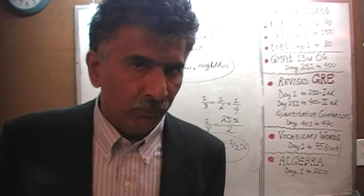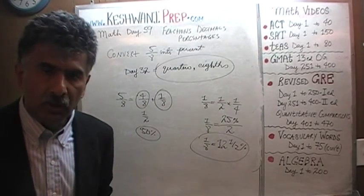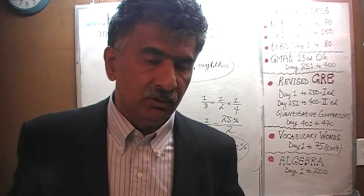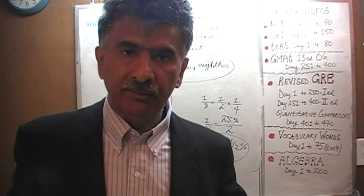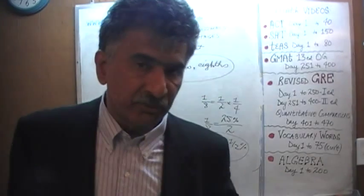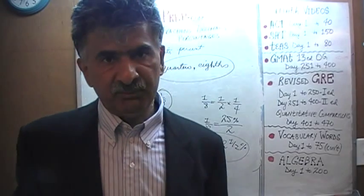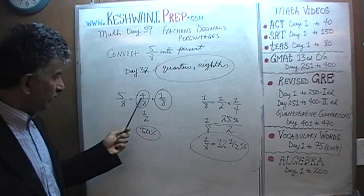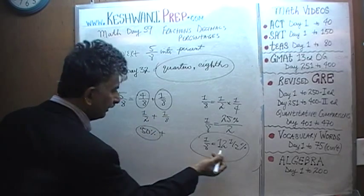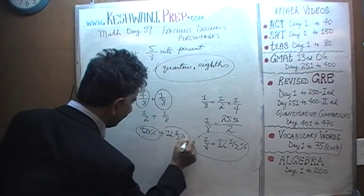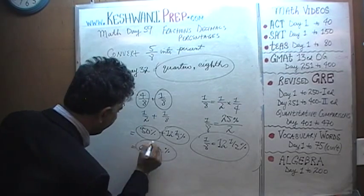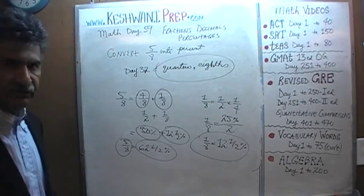What I'm trying to make you understand is: don't memorize it. Make the connection between the quarter and the eighth. Everybody knows that one quarter is simply 25%. Well, if one quarter is 25%, one eighth is simply half of a quarter — half of 25% is 12 and a half percent. We already have four eighths, which is 50%, plus one eighth which is 12 and a half percent. So it's 50 plus 12 and a half, giving us 62 and a half percent.